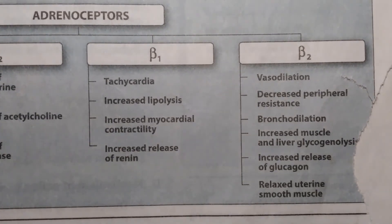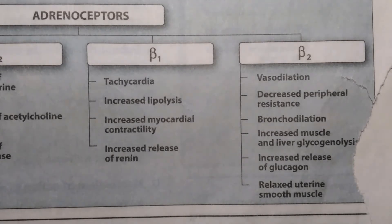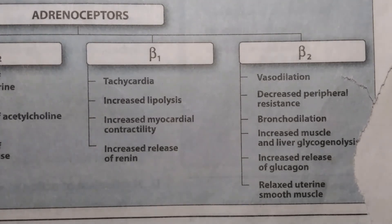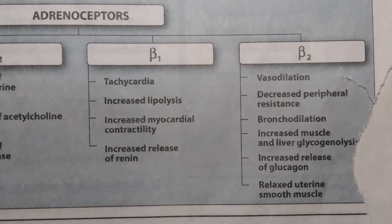Activation of beta 2 receptors causes vasodilation, as these receptors are present in the vessels — the opposite effect of alpha 1 receptors. Vasodilation leads to a decrease in peripheral resistance and a decrease in blood pressure. Beta 2 activation also causes bronchodilation and glycogenolysis, as well as release of glucagon.